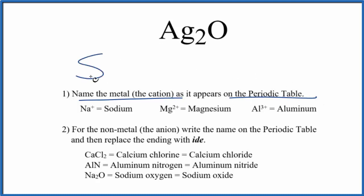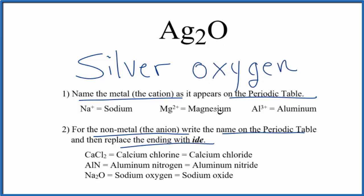Ag, that's silver. Next we'll write the name for the nonmetal as it appears on the periodic table. So we have oxygen. Then we're going to replace the ending with ide.